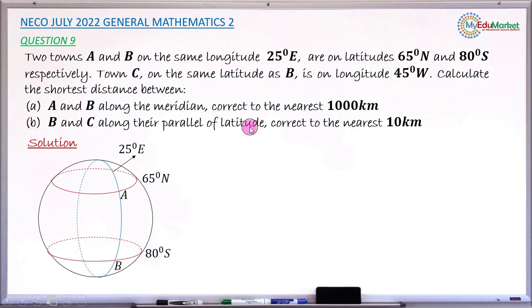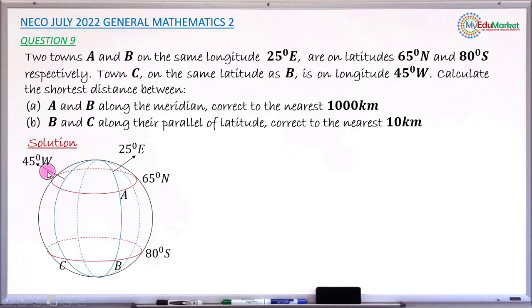Next, locate town C. Town C and town B share the same latitude — 80 degrees south — but town C is on longitude 45 degrees west. Draw that longitude on the left side. Where longitude 45°W crosses latitude 80°S is the location of town C. All three towns are now correctly positioned on the drawing.